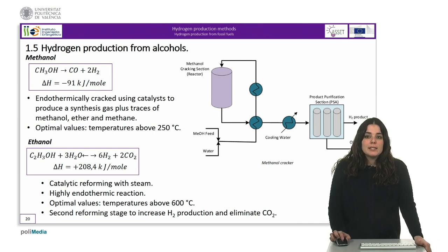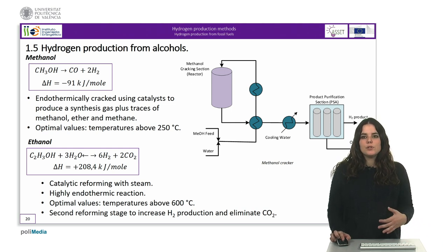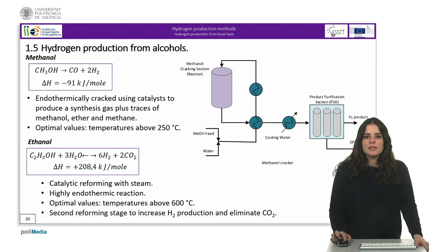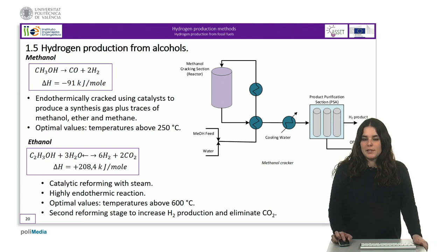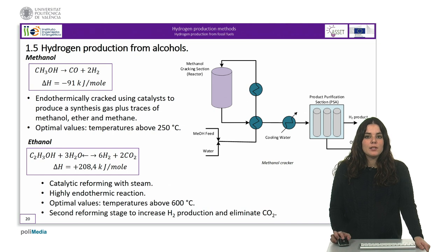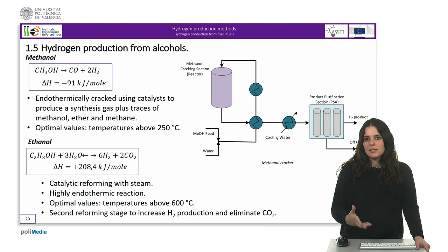As for ethanol, it is a very promising source of hydrogen as it is a renewable source when obtained from biomass. Therefore, catalytic reforming with steam is of increasing interest. This reaction has been widely studied using catalysts based on nickel, copper, cobalt and noble metals. The reaction is highly endothermic and requires high temperatures, usually above 600 degrees Celsius. At these temperatures, the ethanol is reformed into a mixture of hydrogen and CO2, and it is necessary to go through a second reforming stage to increase hydrogen production and eliminate CO.